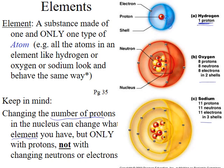So oxygen will always have eight protons, and sodium will always have eleven protons. Sometimes the number of electrons or neutrons can vary — if you have isotopes, you know what that is — but that's not something we truly have to worry about. For now, just know that protons are how we definitively say this is a hydrogen atom, or this is an oxygen atom, or this is a sodium atom.